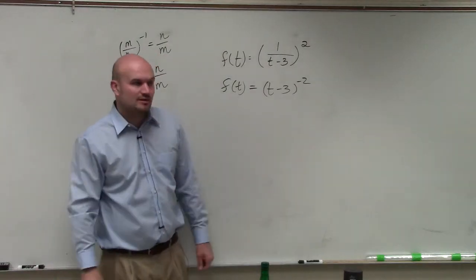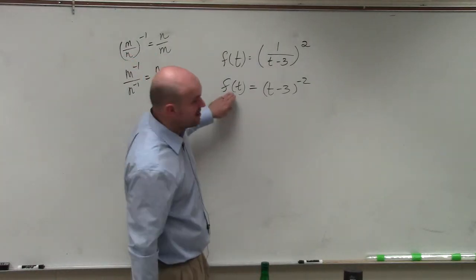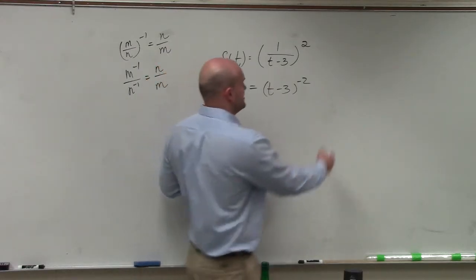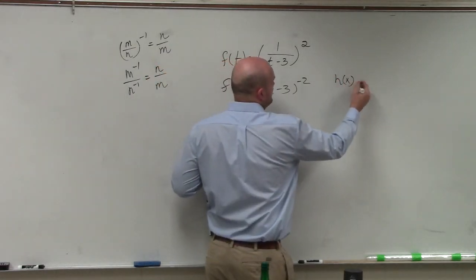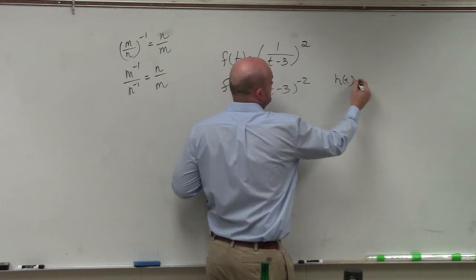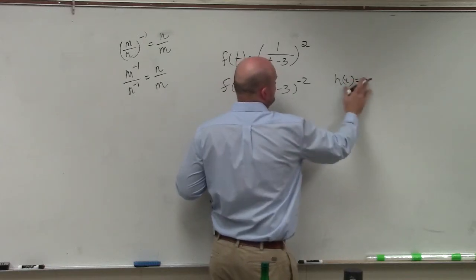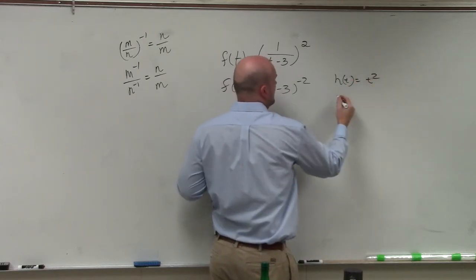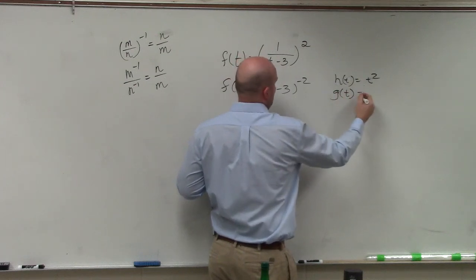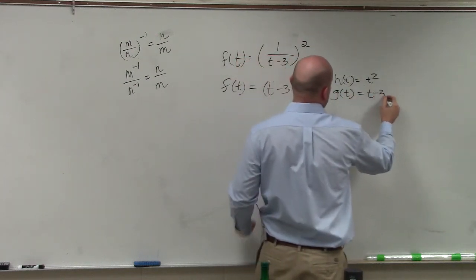Now we can go and take a look at our inside-outside functions. I'm not going to use f of x or f of t because this one's labeled f of t. So I'm going to use h of t as my outside, which is t to the negative 2nd power. And then I'll use g of t, which would be my inside, which is t minus 3.